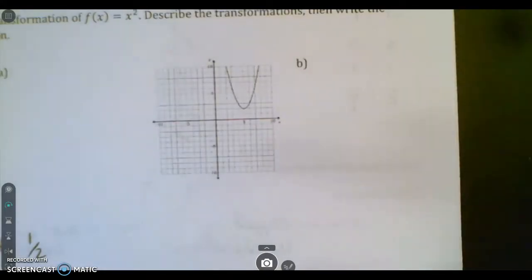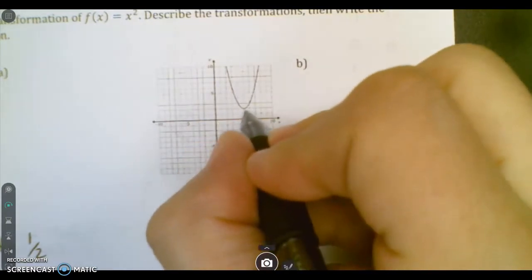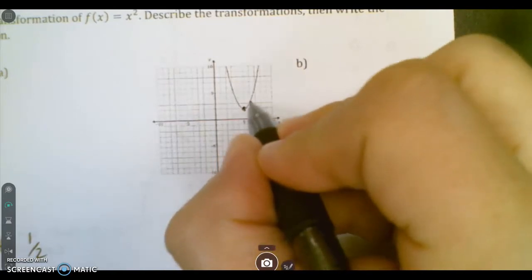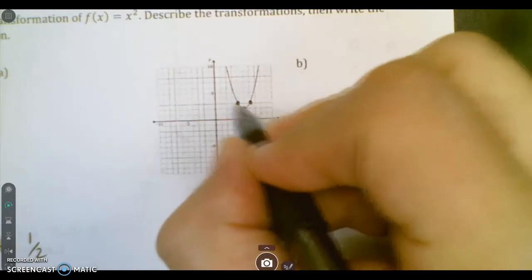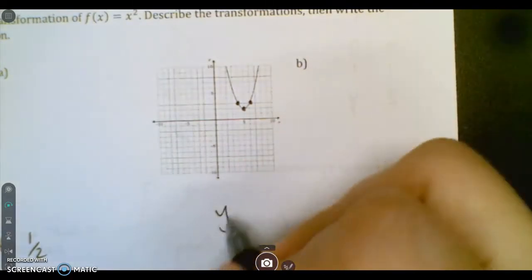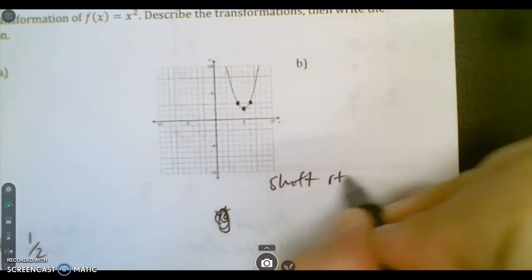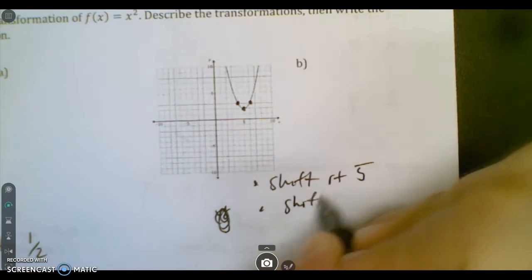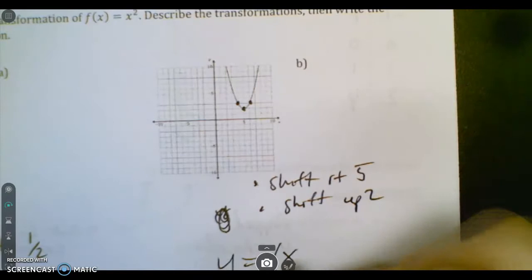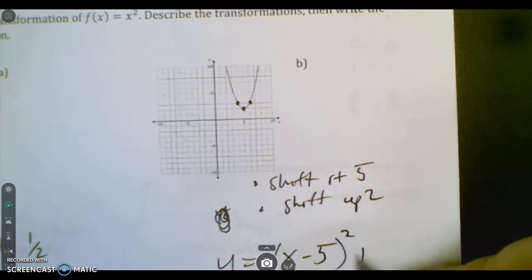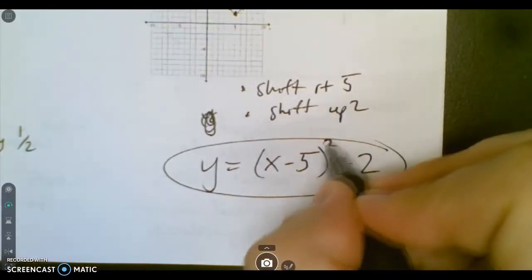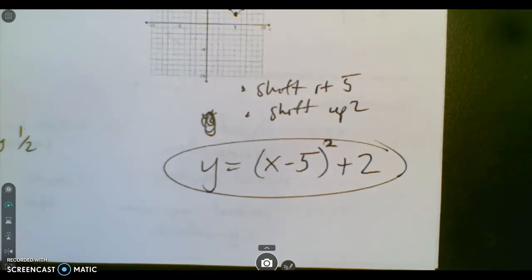So this one. This one's been shifted to the right 5 and up 2. And then it's supposed to go right 1, up 1. And it looks like it does. So on this one it looks like it's not stretched or anything. It's not flipped upside down. So this one's just shift right 5 and shift up 2. So y equals right 5 would actually look like a minus and up 2. Don't forget you're squared. A lot of people forget that.